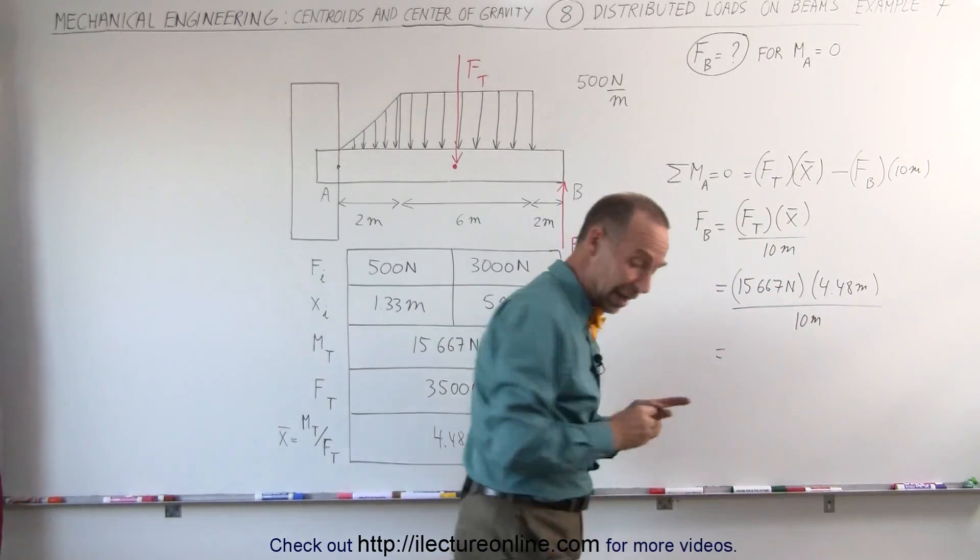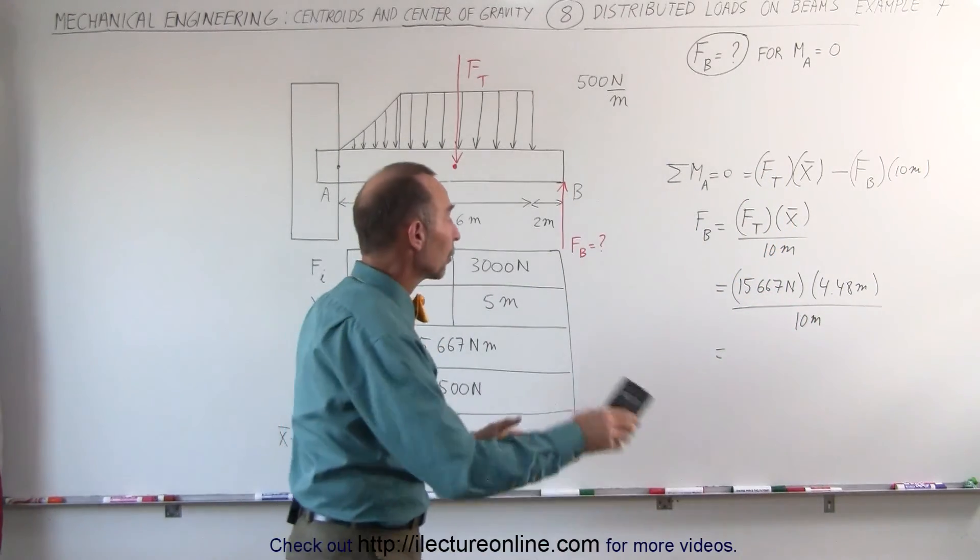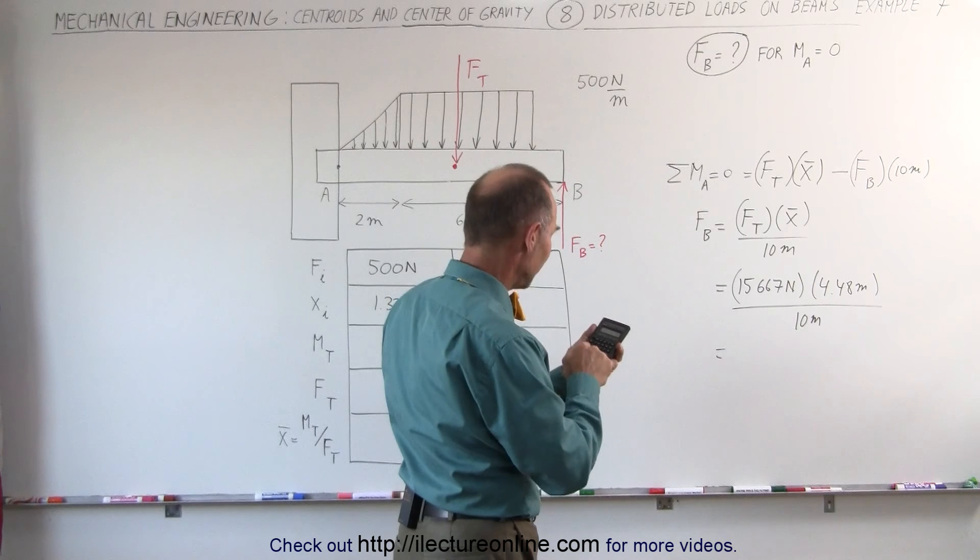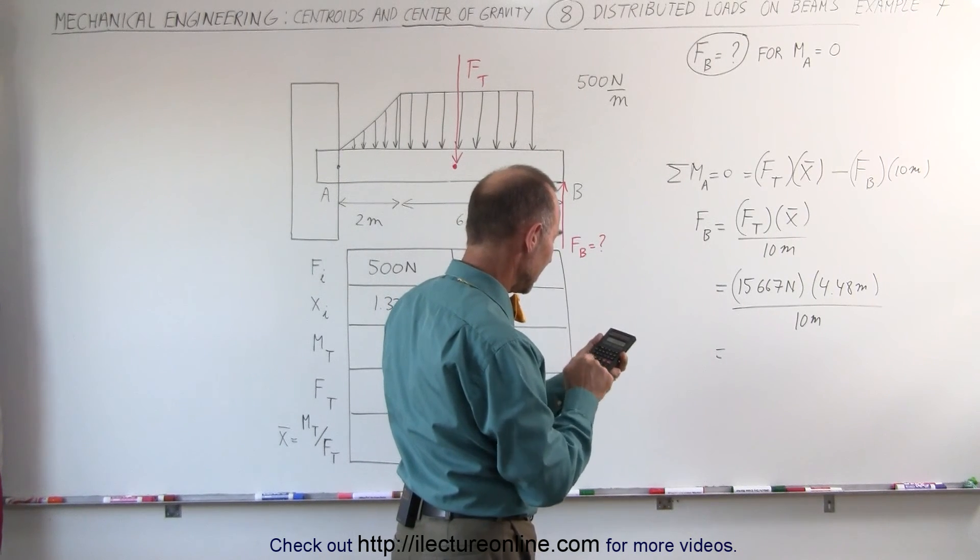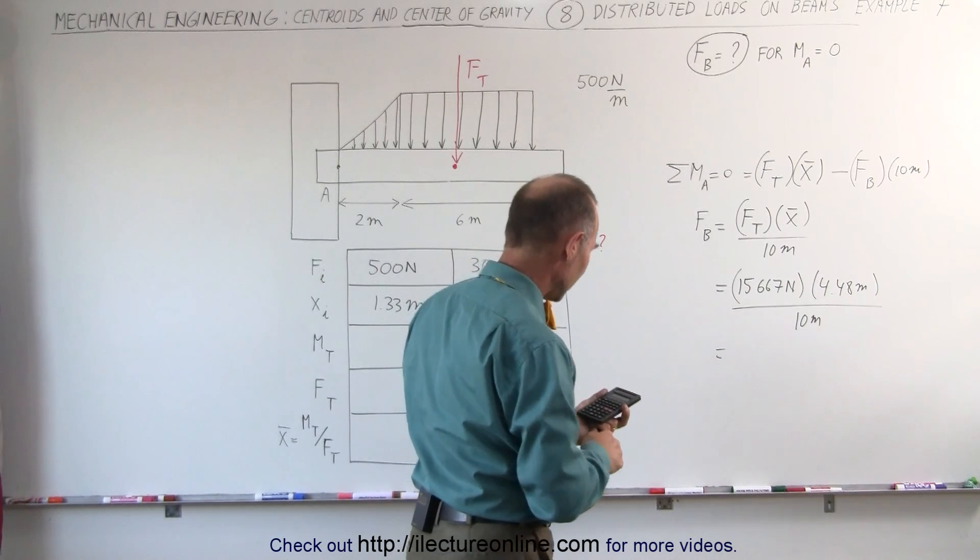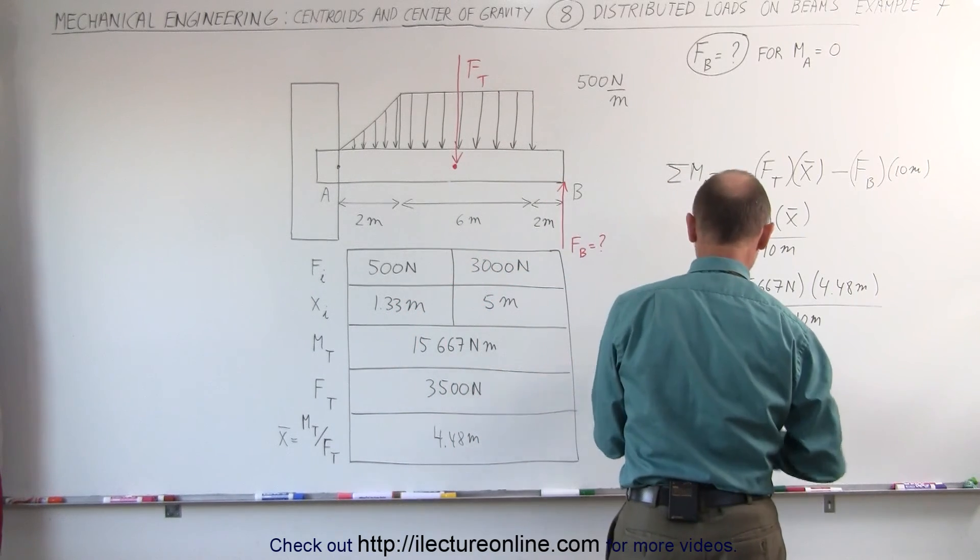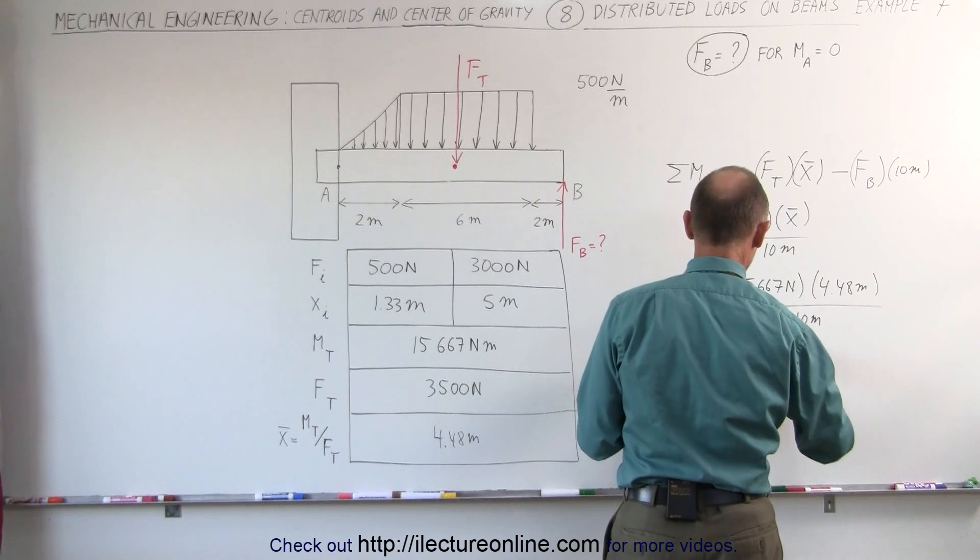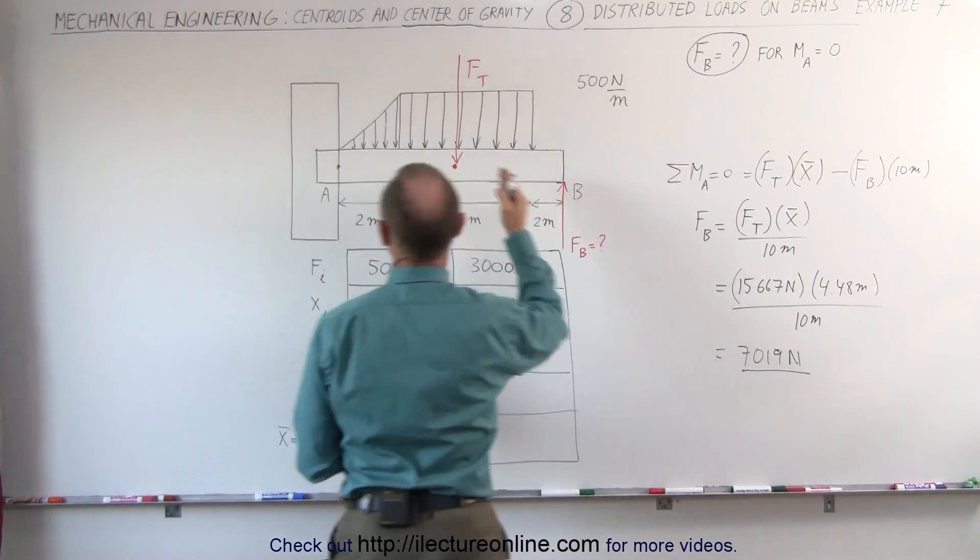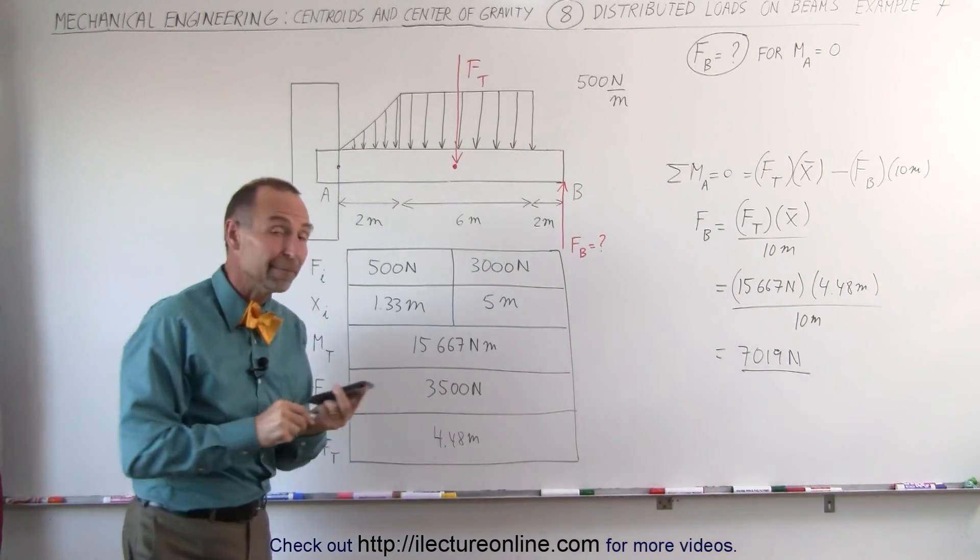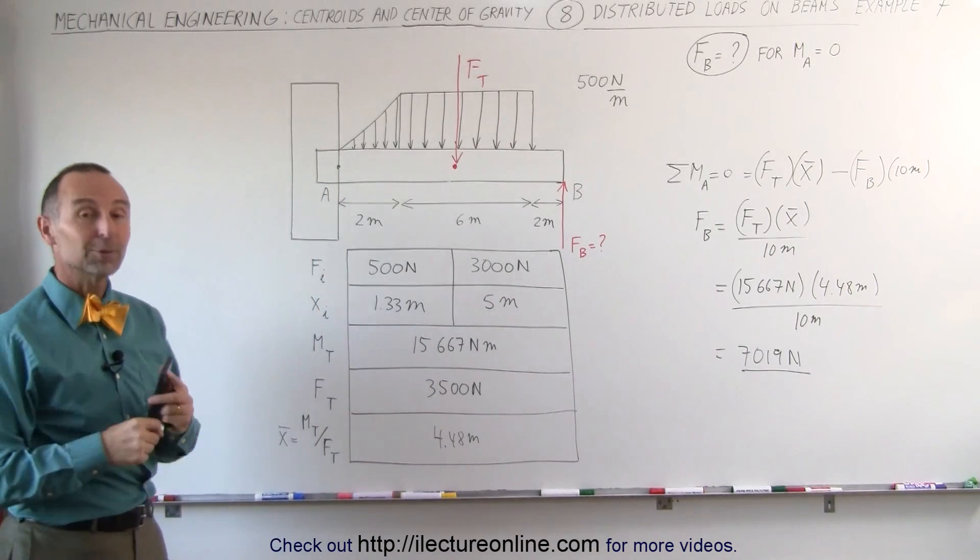And that'll give us the reactionary force required at B. 15,667 times 4.48 divided by 10 equals a total of 7,019 Newtons of force required at B to make sure that there is no moment at A. And that is how we do that problem.